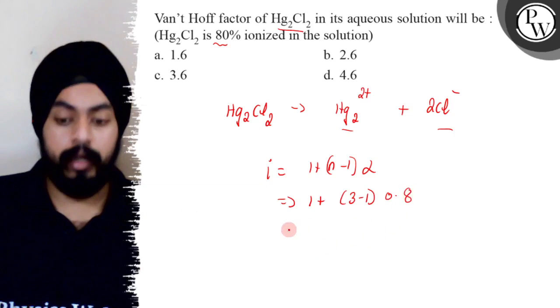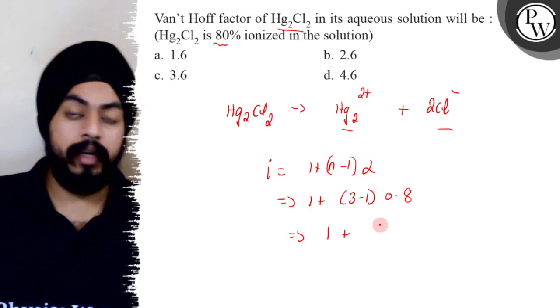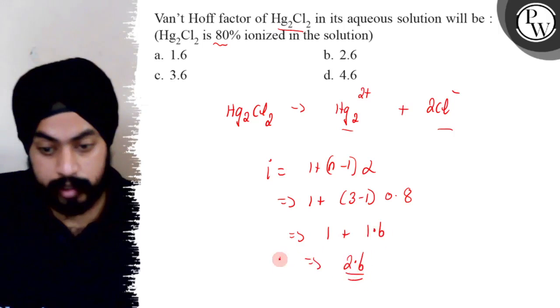This gives us 1 plus 2 into 0.8. Now 2 into 0.8 equals 1.6, so this will be 1.6. Therefore i will be 2.6.